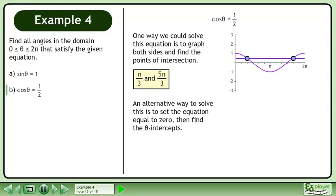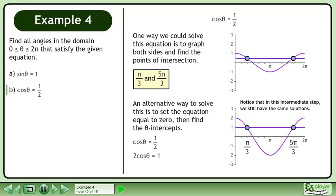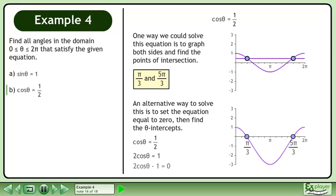An alternative way to solve this is to set the equation equal to 0, then find the θ-intercepts. We write cosθ equals 1 half. Multiply both sides of the equation by 2. Notice that in this intermediate step, we still have the same solutions. The θ-intercepts are π over 3 and 5π over 3.